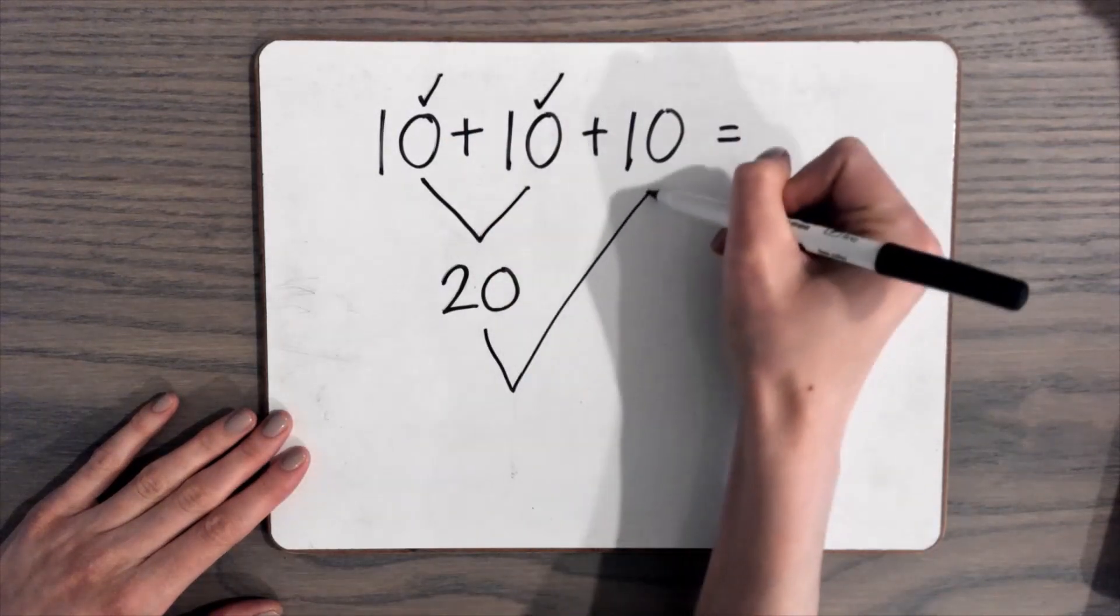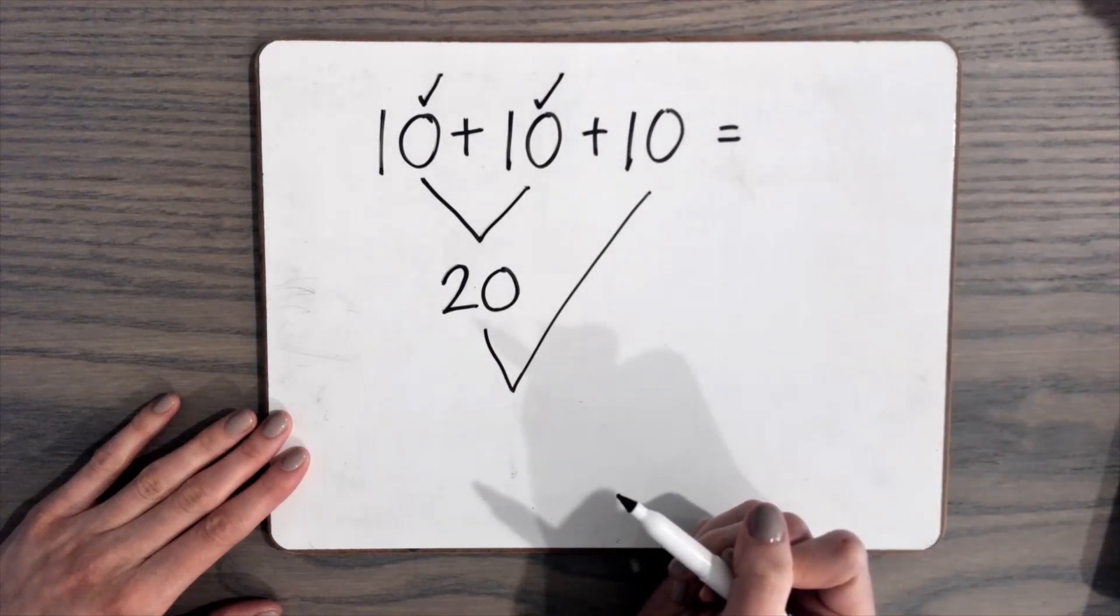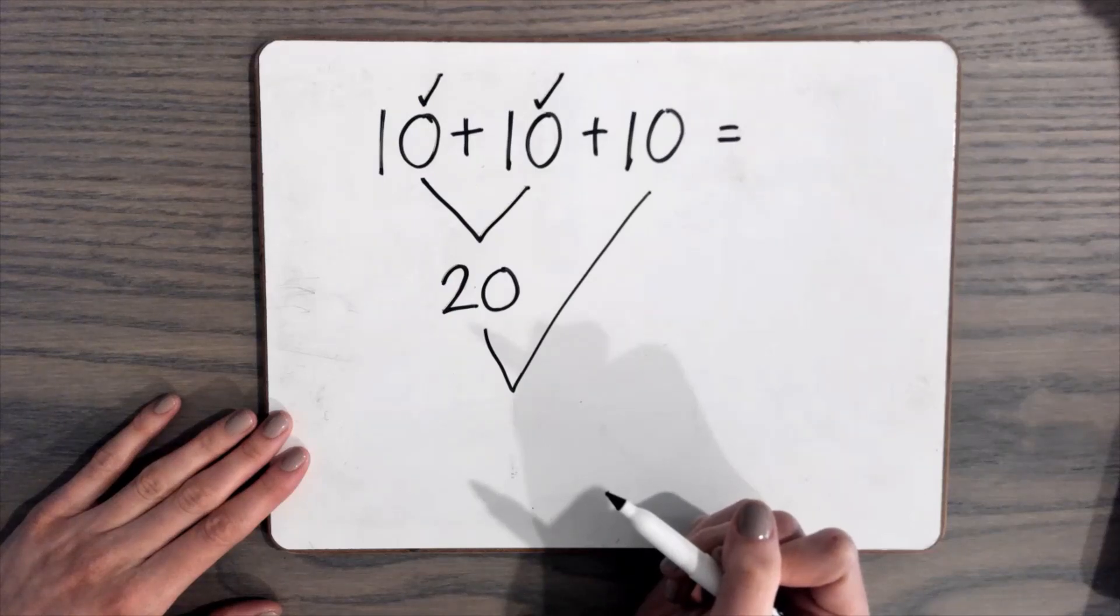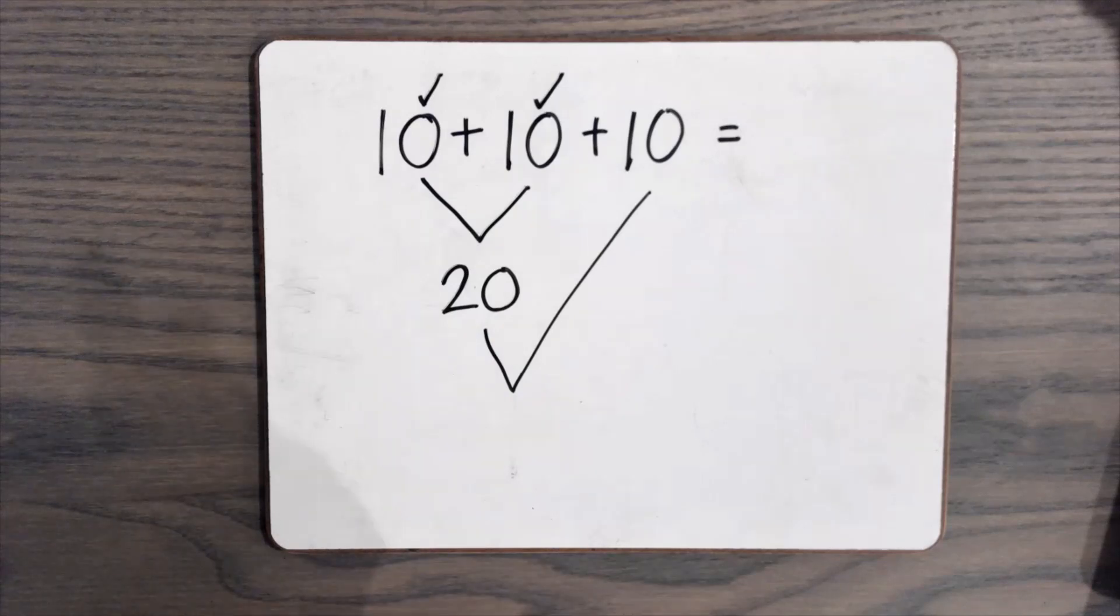Now 20 plus 10 more, you can do this in many ways. You might just know quickly that 10 more than 20 is 30. If not, you can count on. So that looks like this.